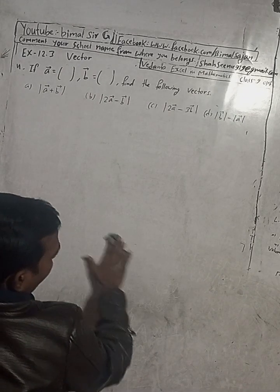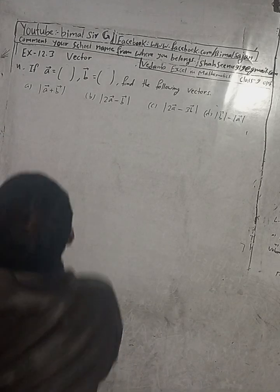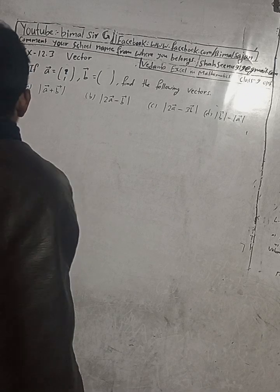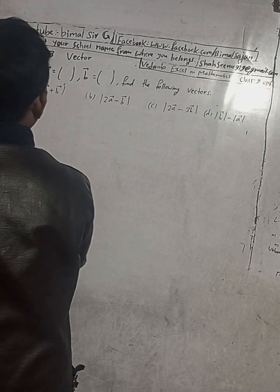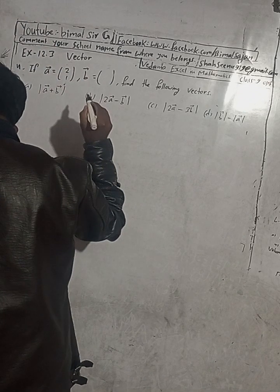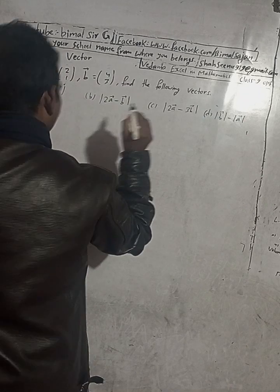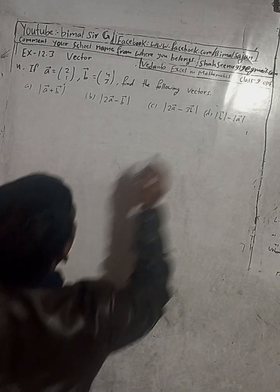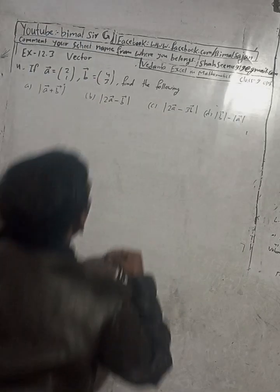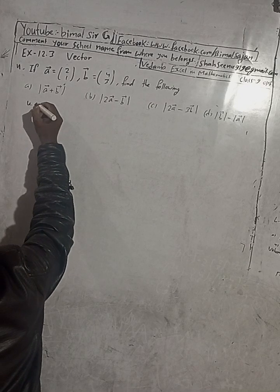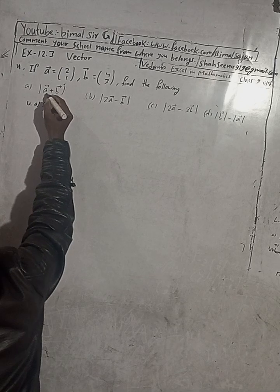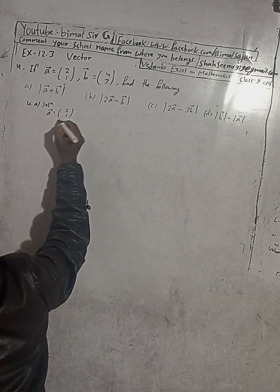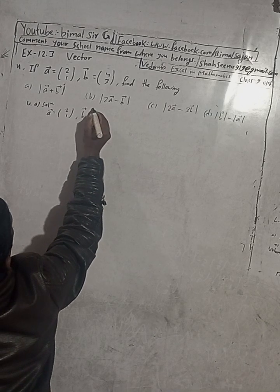Don't forget to check the Vimal Sharjee channel's playlist — the playlist contains many solutions. Now the question: if vector a is given as (2, 1) and vector b is given as (4, 3), we have to find the following.